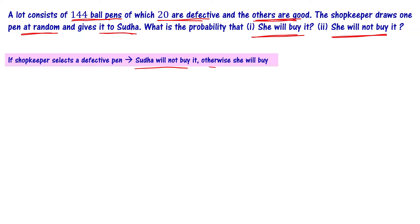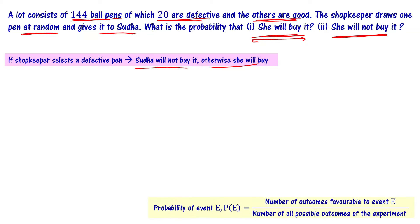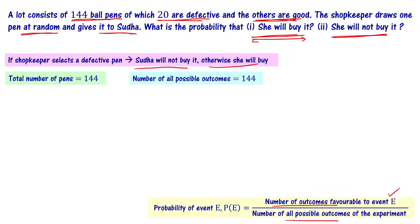What is the probability that she will buy it, meaning what is the probability that she picks a good pen? The probability definition is: number of favorable outcomes divided by number of all possible outcomes. The total number of pens is 144, so the total possible outcomes are 144.